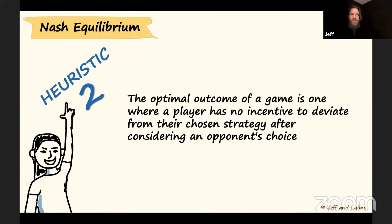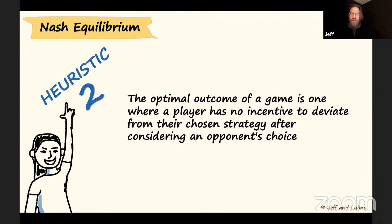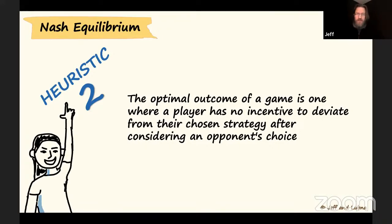The second heuristic — created by John Nash — is the Nash equilibrium: the optimal outcome of a game where no player has incentive to deviate from their chosen strategy. Think of chess and how you strategize based on your opponent's potential choices. As we get into the UX side of things, this will be really important in design advocacy.